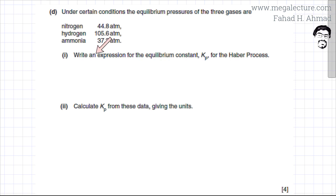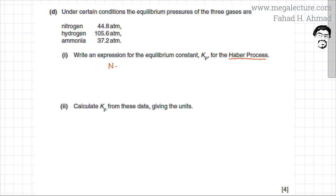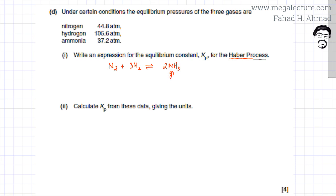The first part of the question states to write an expression for the equilibrium constant Kp for the Haber process. We need to write the equation: one nitrogen molecule reacts with three moles of H₂ in equilibrium with two molecules of ammonia. All species are gases — ammonia, hydrogen, and nitrogen.